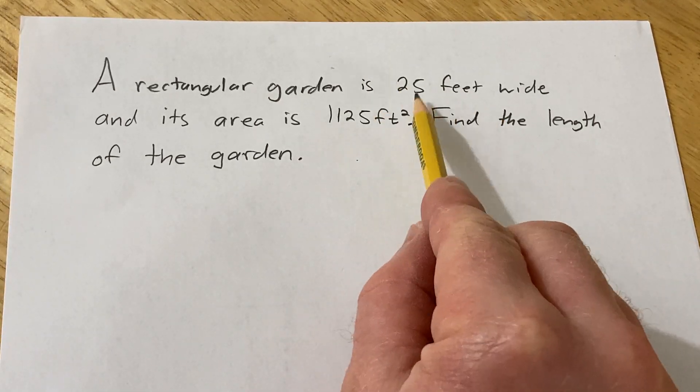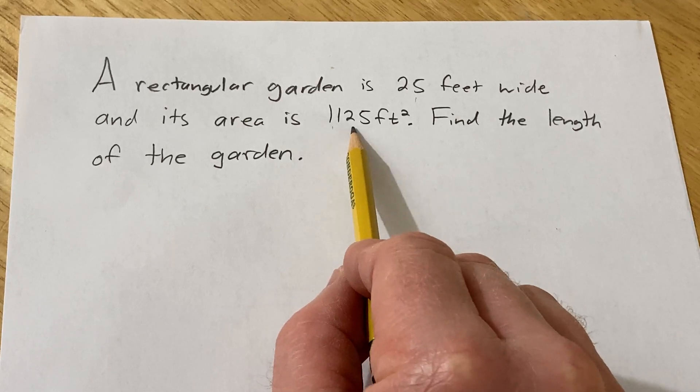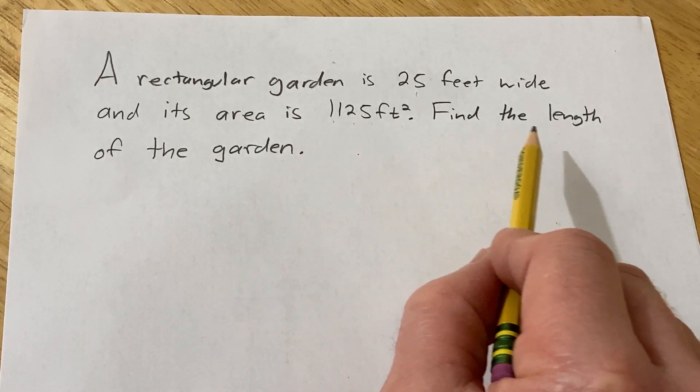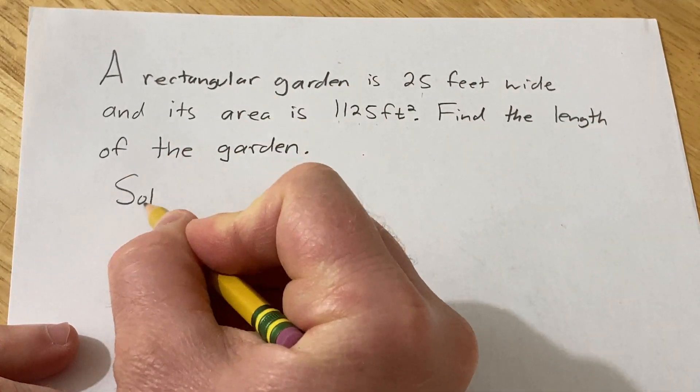A rectangular garden is 25 feet wide and its area is 1,125 feet squared. Find the length of the garden. Let's go ahead and work through this solution.